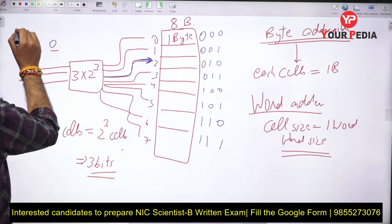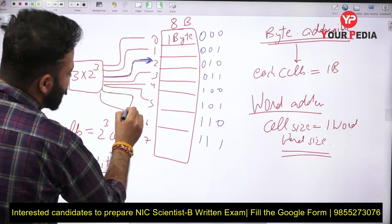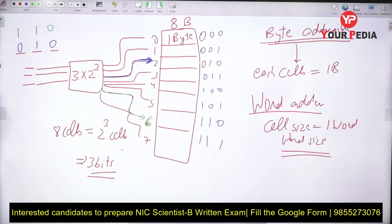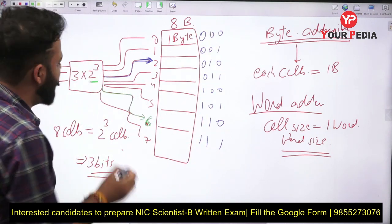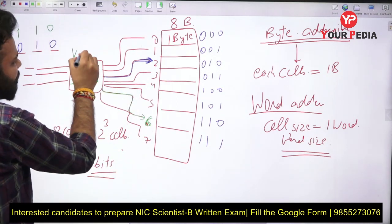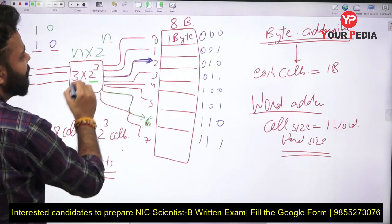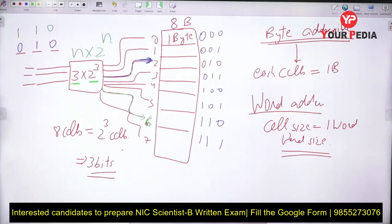If the address is 1-1-0, it will directly go to the link giving you 1-1-0 and you will directly access the memory. So n bits are required means the number of cells will be 2 raised to power n. This is an n-to-2ⁿ decoder, and this is how memory addressing works.